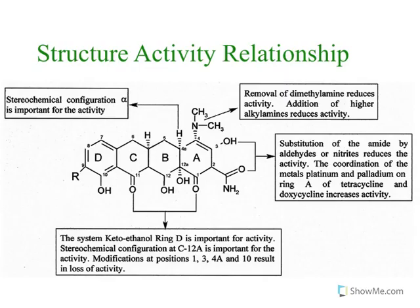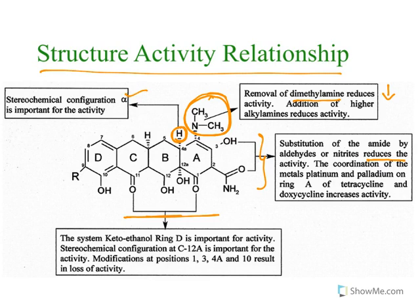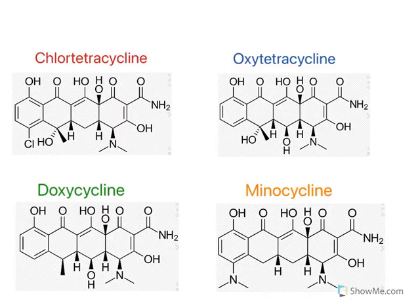In structure-activity relationships, the alpha configuration of the amine at C4 is required, so removal of the dimethylamino group reduces activity. The carboxamide substitution is also essential — any change reduces activity. The keto-enol ring is also important for activity. The stereochemical alpha configuration at C4a is required. The only position available for modification is C7, where chloro or dimethylamino groups — which are electron-withdrawing — can be substituted, giving chlorotetracycline and minocycline.